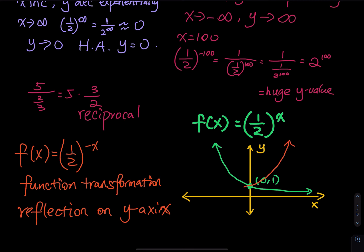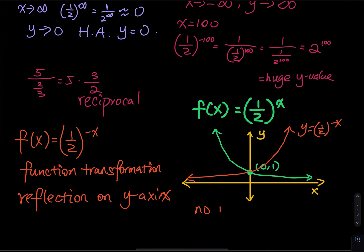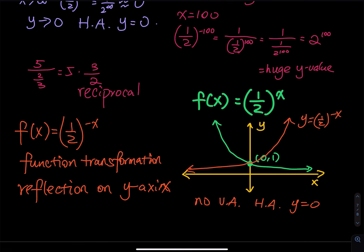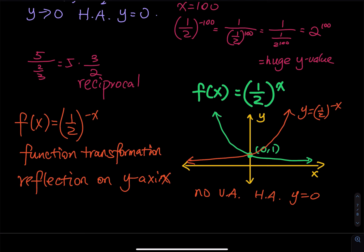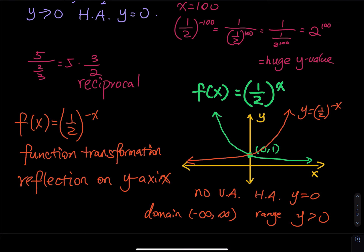Both f(x) = (1/2)^x and f(x) = (1/2)^(-x) have no vertical asymptote, a horizontal asymptote of y = 0, the same y-intercept at (0, 1), a domain of all real numbers, and a range of y greater than zero. That wraps up this video — if you found it helpful, please like, share, and subscribe.